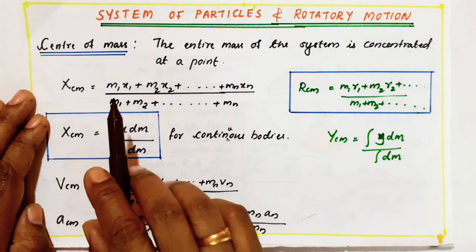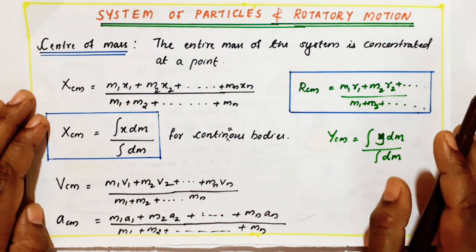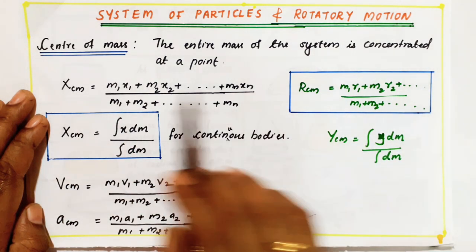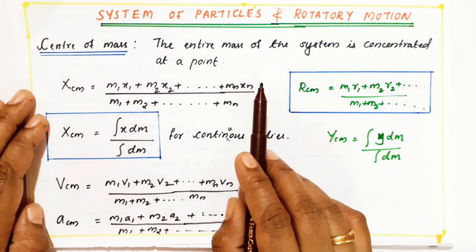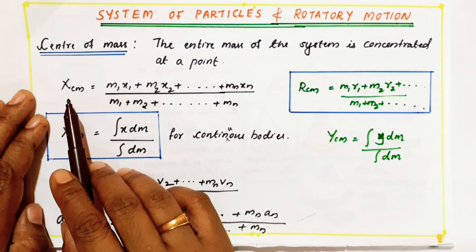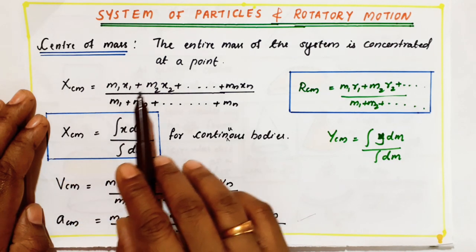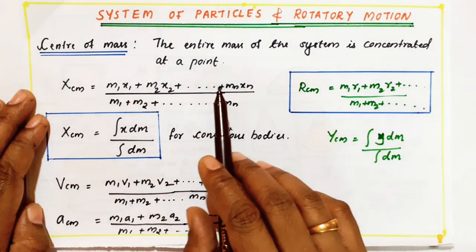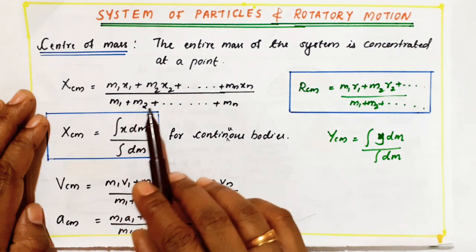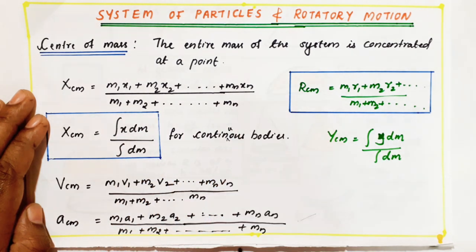Let few bodies of masses m1, m2, m3 be located at distances x1, x2, x3. Then I can find the center of mass by using the formula: m1·x1 plus m2·x2 plus ... up to mn·xn, divided by m1 plus m2 plus ... up to mn.